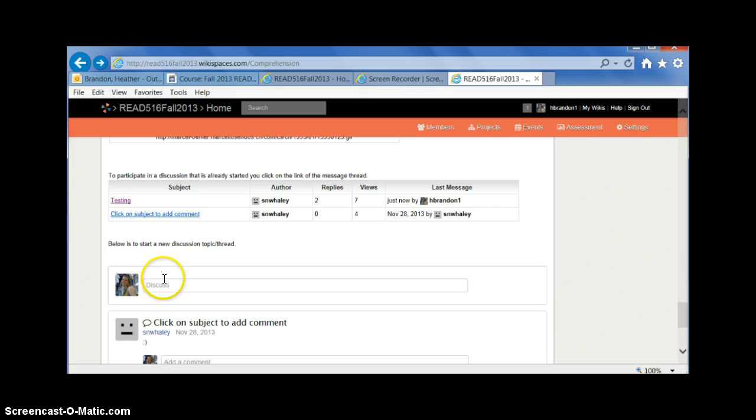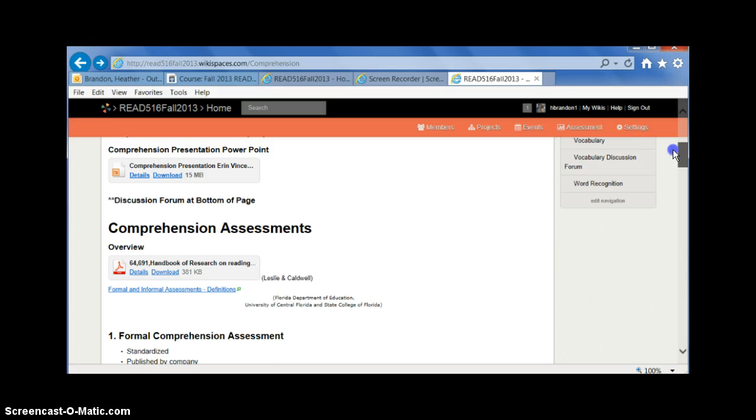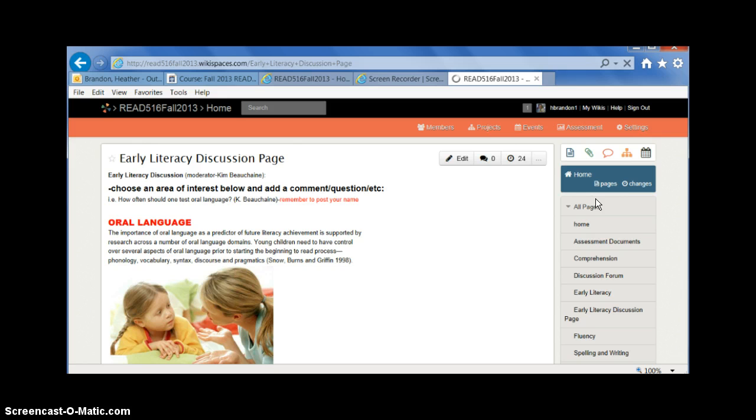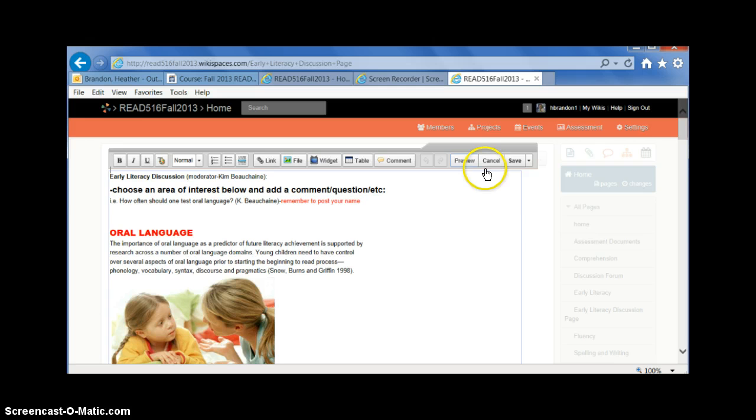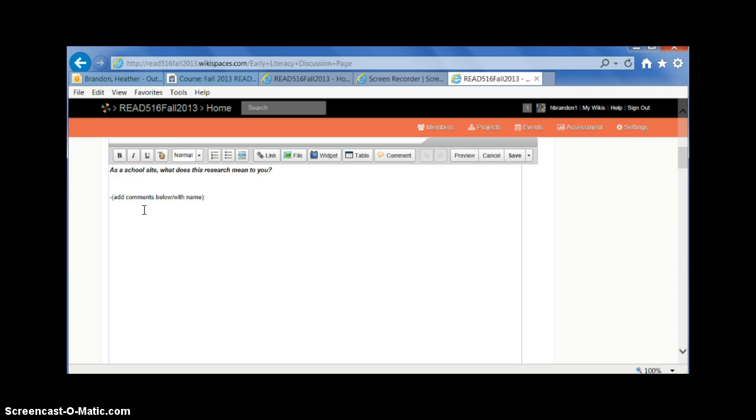Also down here is another place where you can comment but I know like our early literacy group here has a separate discussion page and they actually want you to type in here to the comments. So what you're gonna need to do is make sure that you enable the editing. Right? And then go down here and then put your name and a colon and say your comment. Don't forget to include your name in front of your comment like this. So and then you want to make sure that you save.